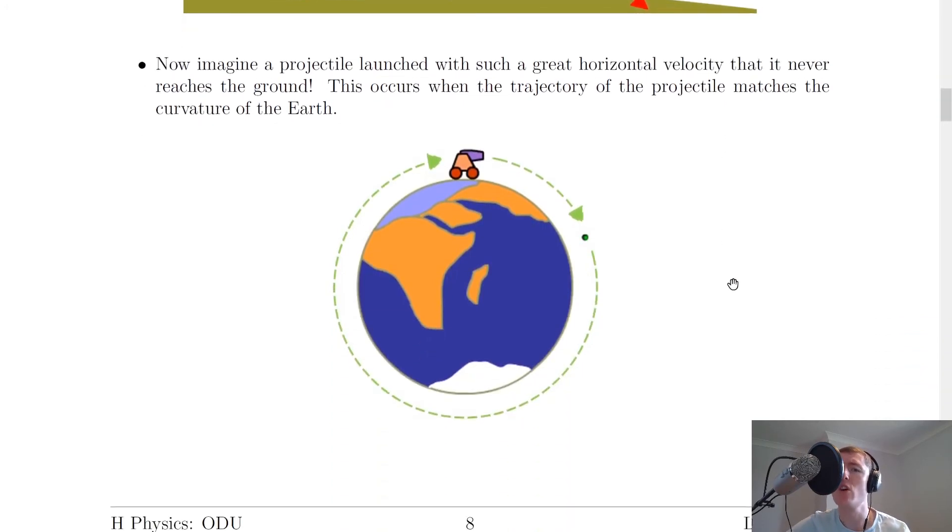Now imagine a projectile that is launched with such a great horizontal velocity that it never reaches the ground. This occurs when the trajectory of the projectile matches the curvature of the Earth. So there is the trajectory in green there.